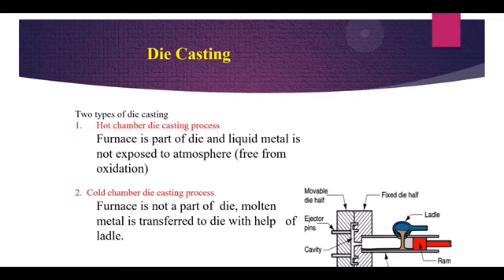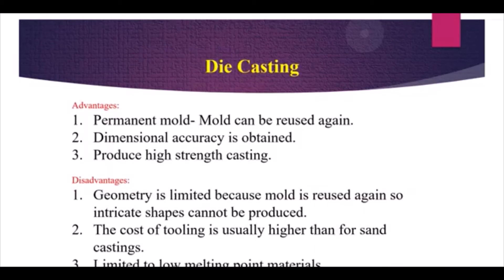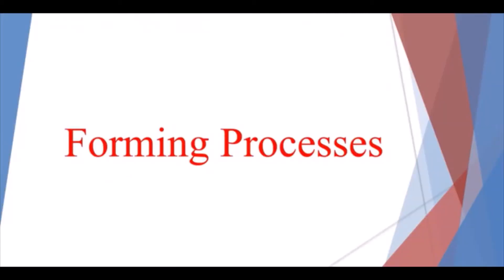Advantages of die casting include: use of a permanent metal mold, good dimensional accuracy, and higher production strength. Disadvantages include: geometry is limited because the mold is reused so complex intricate shapes cannot be produced, higher tooling costs, and it is limited to low melting point materials.